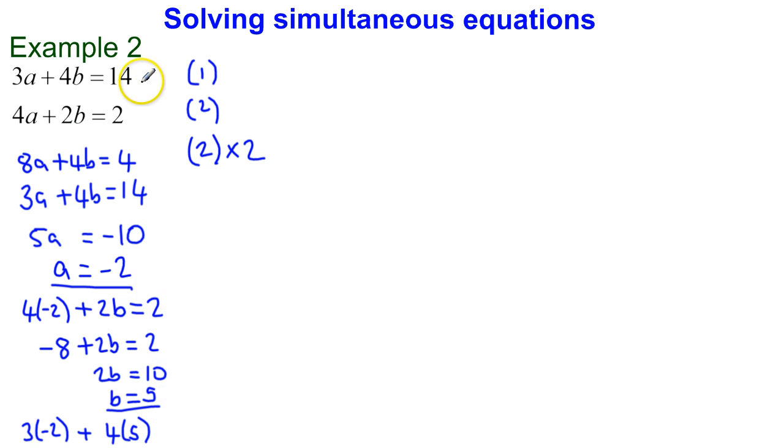And if this works, this should equal 14, so that's going to be equal to negative 6 plus 20, and negative 6 plus 20 is actually equal to 14, which is what we wanted. So that tells me that this is correct.